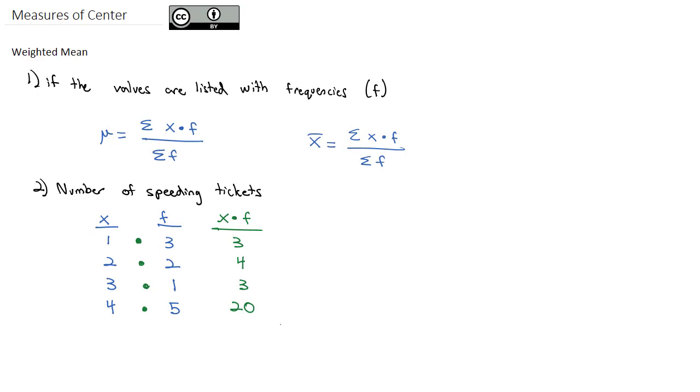The formula for x̄ says we want to take the sum of the x times frequency column. So if we add these up, we'll get the sum of the x times frequency column is 3 plus 4 plus 3 plus 20, which gives us a total of 30.